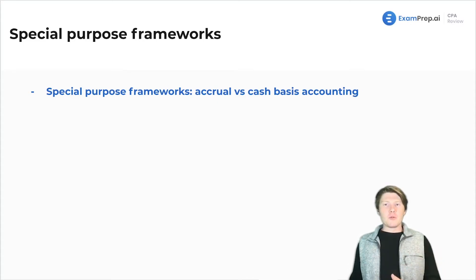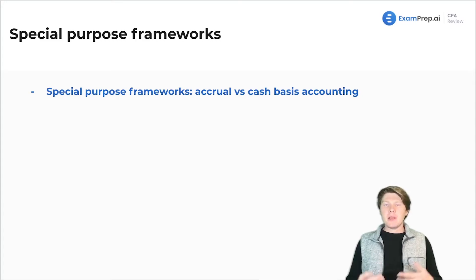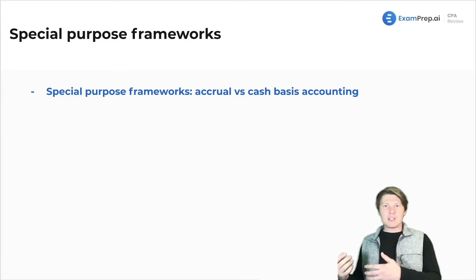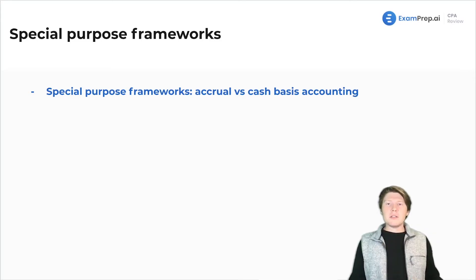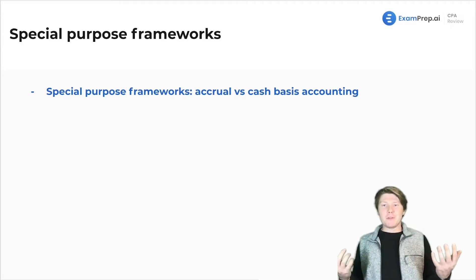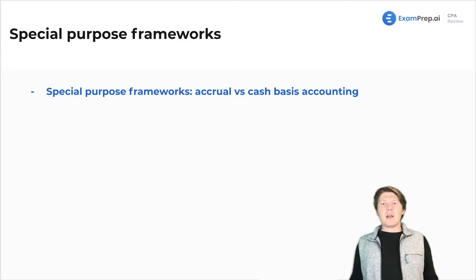Which journal entry — under cash or accrual — do you recognize the revenue or expenses? It depends. The journal entry for recognizing revenue under cash basis has to have cash being debited, being increased. Whereas for accrual, it doesn't need cash — you can have accounts receivable and revenue. That's super important.